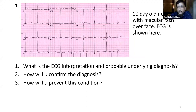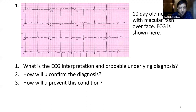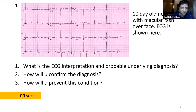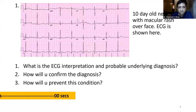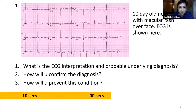Question 1: A 10-day-old neonate with macular rash over the face — an ECG is shown. What is the ECG interpretation and probable underlying diagnosis? How will you confirm the diagnosis? How will you prevent this condition? Are people responding in the chat box?